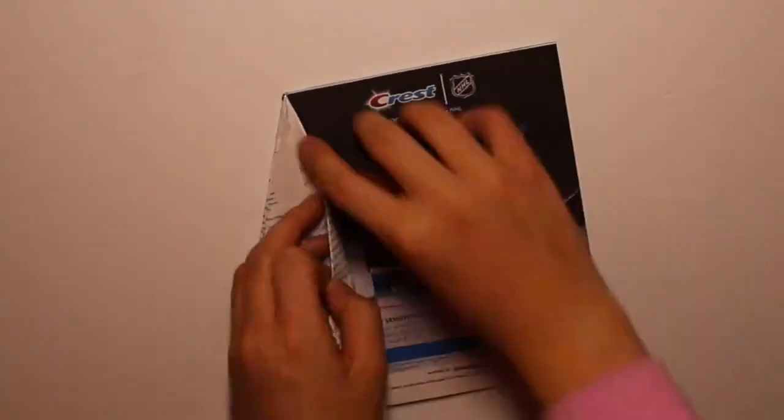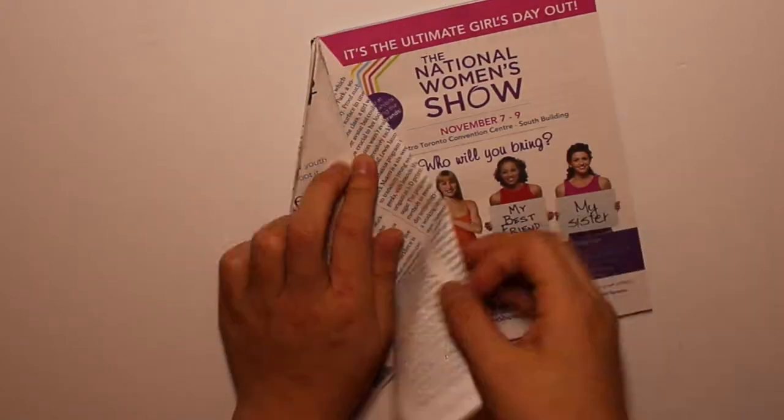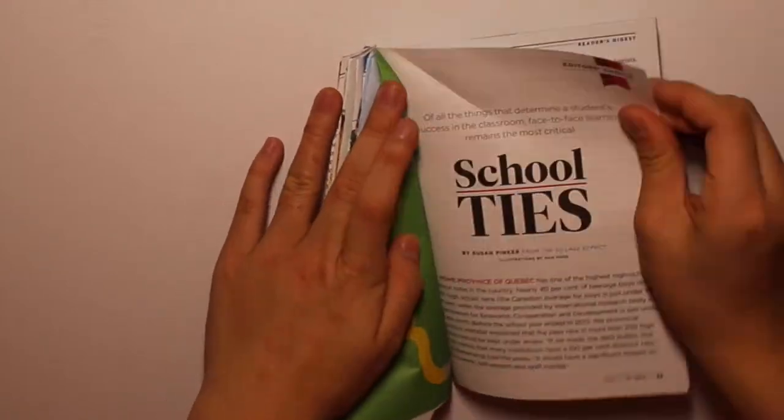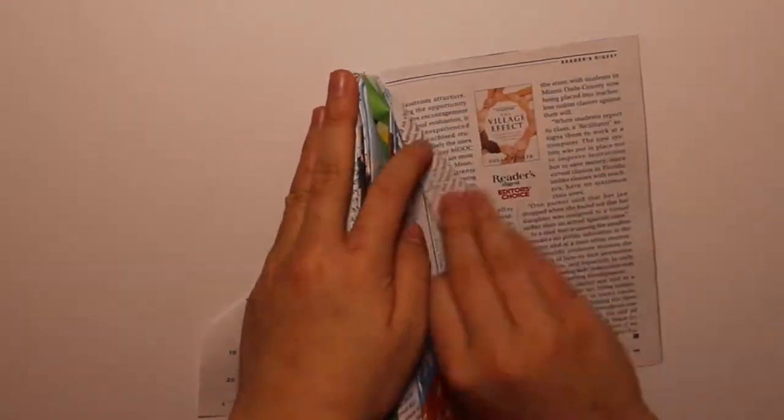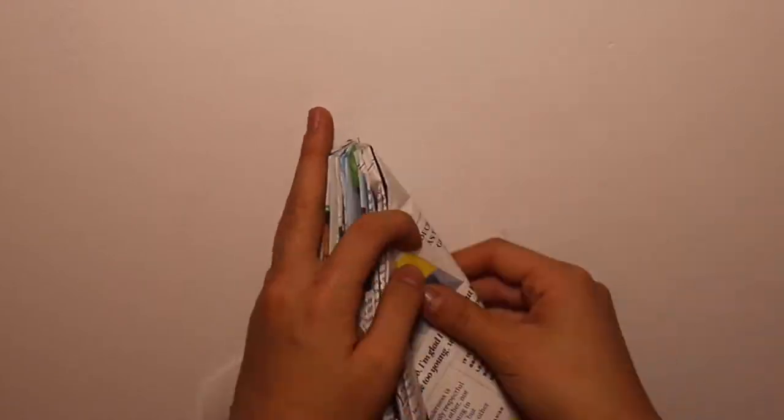Just keep doing it until you're done all the pages. And once you're done folding all the pages, you're just going to take a pair of scissors and cut off the excess at the end.